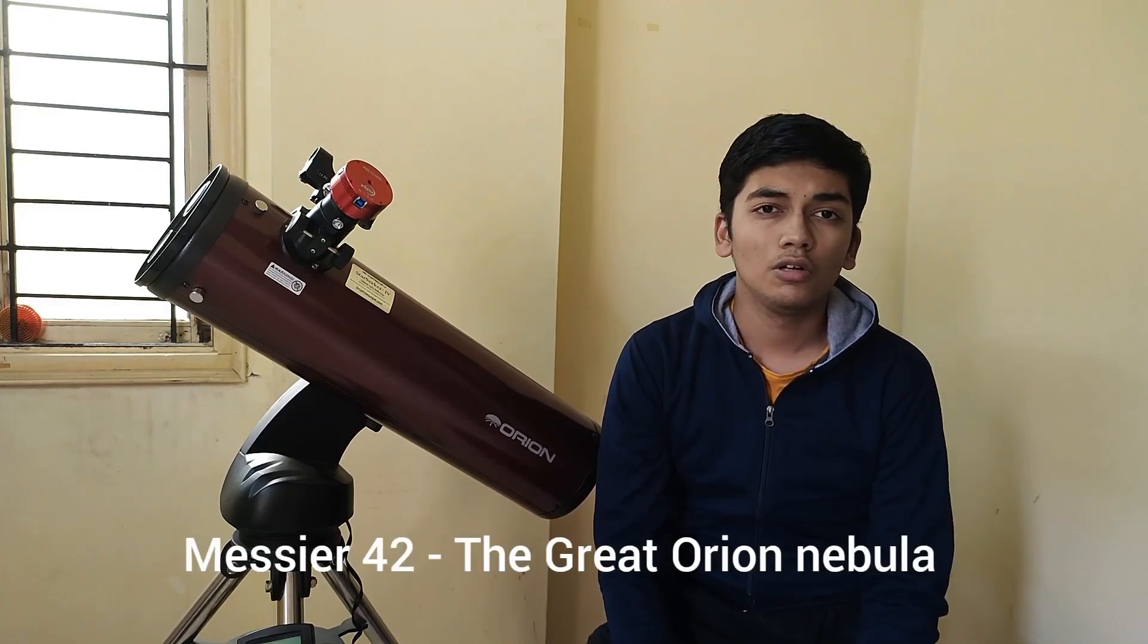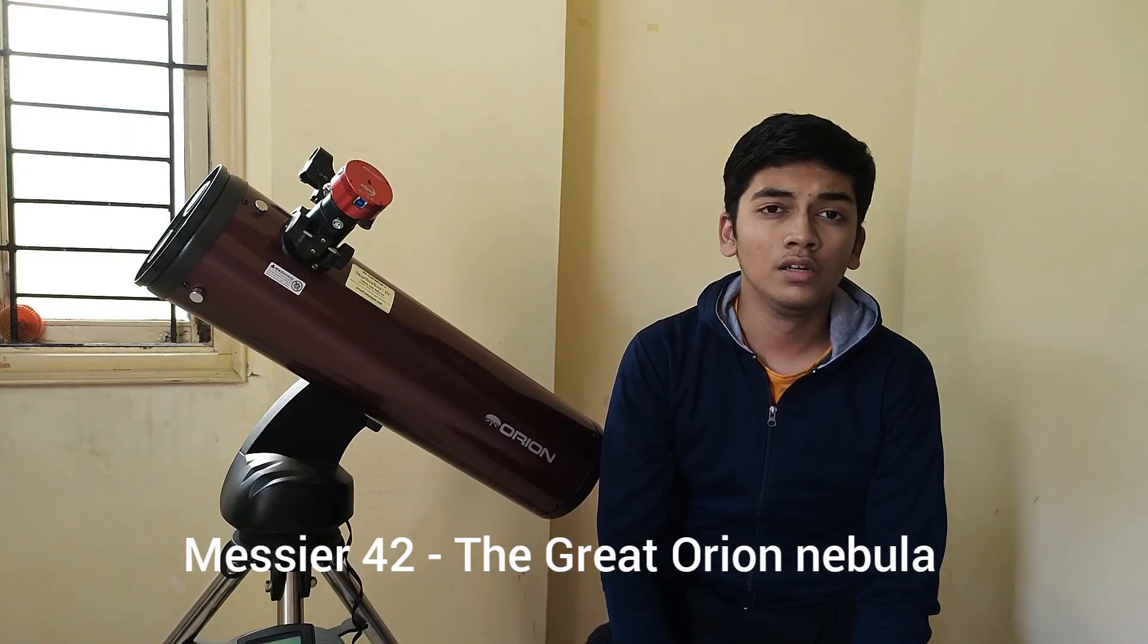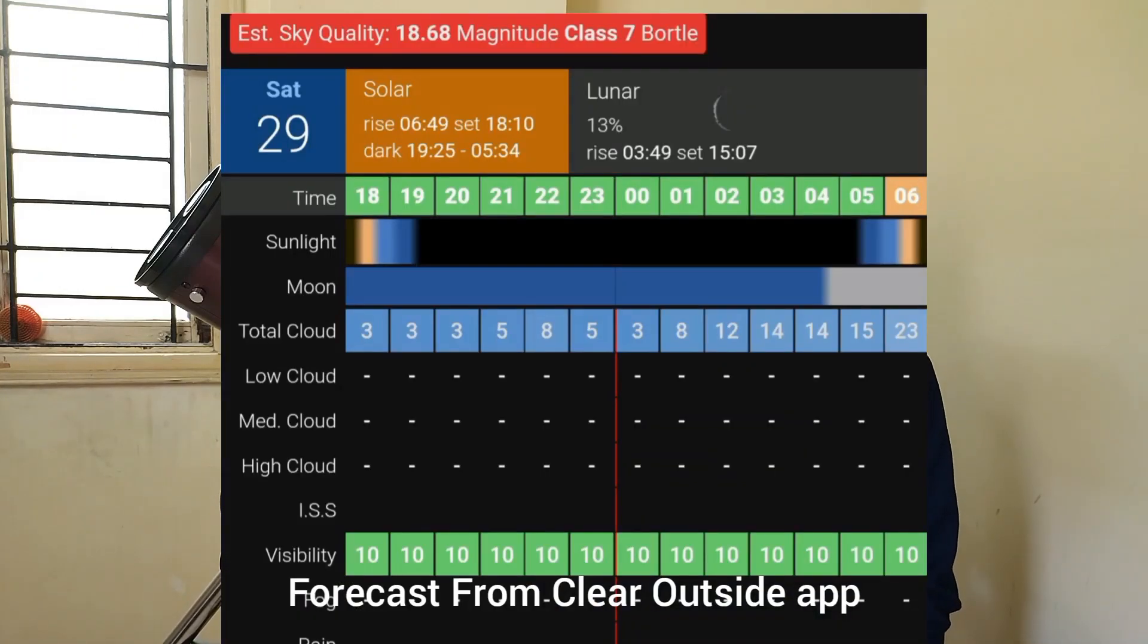So tonight my target is Messier 42, or the Great Nebula of Orion. Today's target is a deep sky object and thankfully we have a moonless night out, but also a very clear night. It's going to be clear all night and so far the weather is definitely clear.